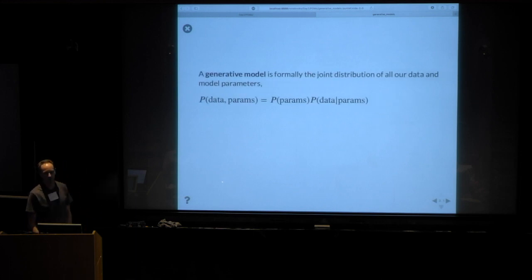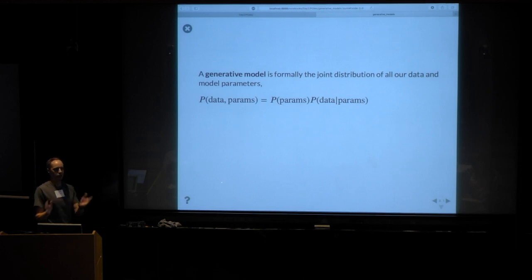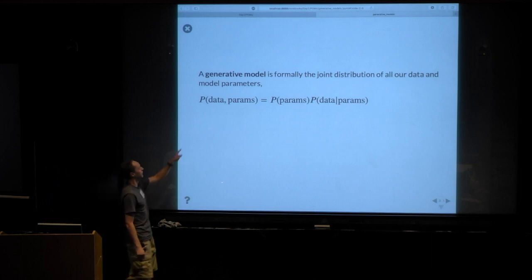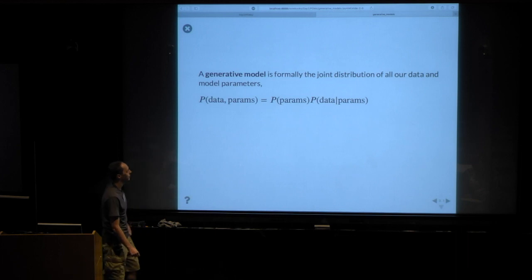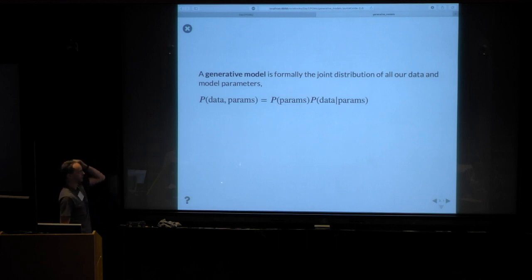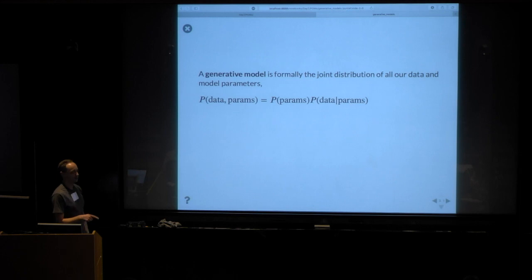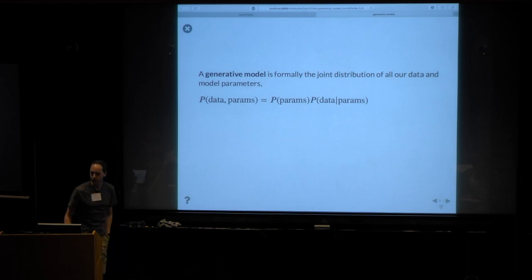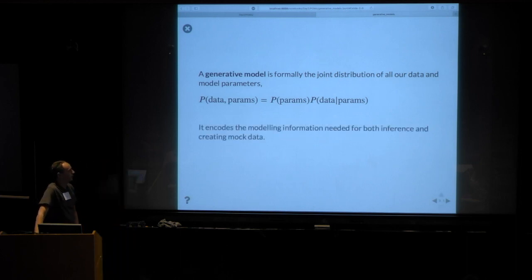The generative model is the joint probability distribution associated with all data and all model parameters — P of data comma parameters, where the comma means 'and together.' You have seen that this can be factorized into conditionally independent pieces in two ways. One is P of params times P of data given params; it could also be P of data times P of params given data. But the first way is familiar because it is the prior times the likelihood.